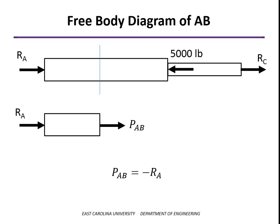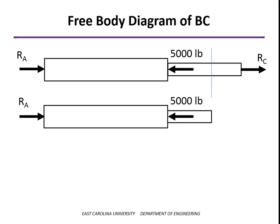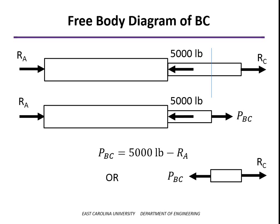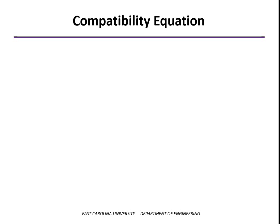Going back to the previous problem — if PAB is positive, it's a positive change in length; if negative, it's a negative change in length. That's critical for solving a statically indeterminate problem. Making a cut for BC, we see that PBC works out to be 5,000 pounds minus the reaction force RA. We can also look at everything to the right and find PBC equals RC. Working with everything to the left makes it easier to solve the statically indeterminate problem.